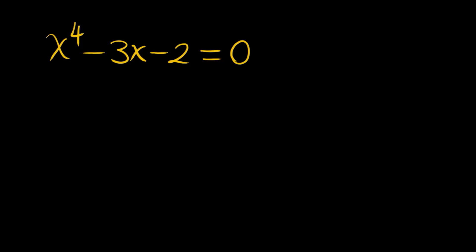Hello everyone, welcome to the channel. We have a challenging quartic equation to be solved for x: x to the power of 4 minus 3x minus 2 is equal to 0.